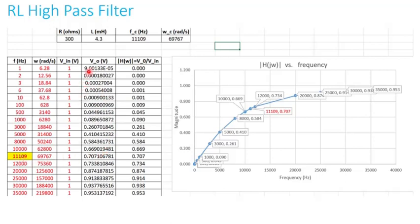At very low frequency the transfer function is essentially zero. It starts increasing gradually, and at the cutoff frequency it reaches 1/√2, which is approximately 0.707. With a 1 volt input, by 35,000 hertz the output is close to 1 volt — nearly equal to the input. The graph of magnitude versus frequency clearly shows the magnitude rising as frequency increases, with the cutoff frequency marked.